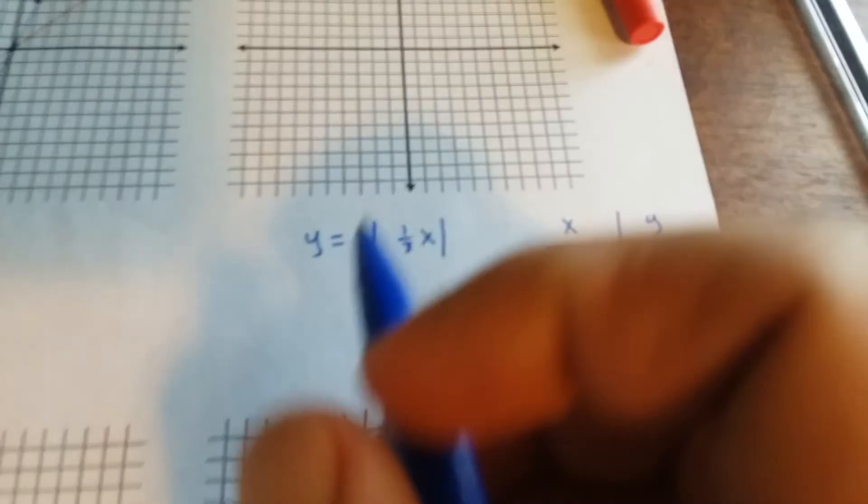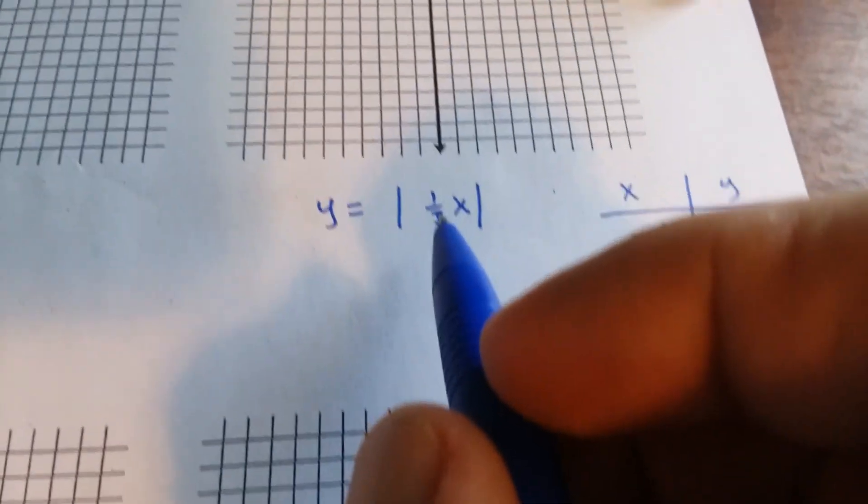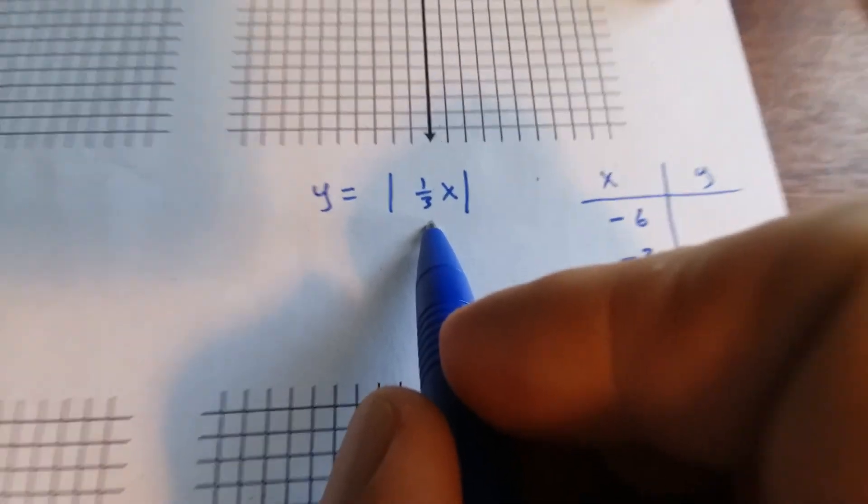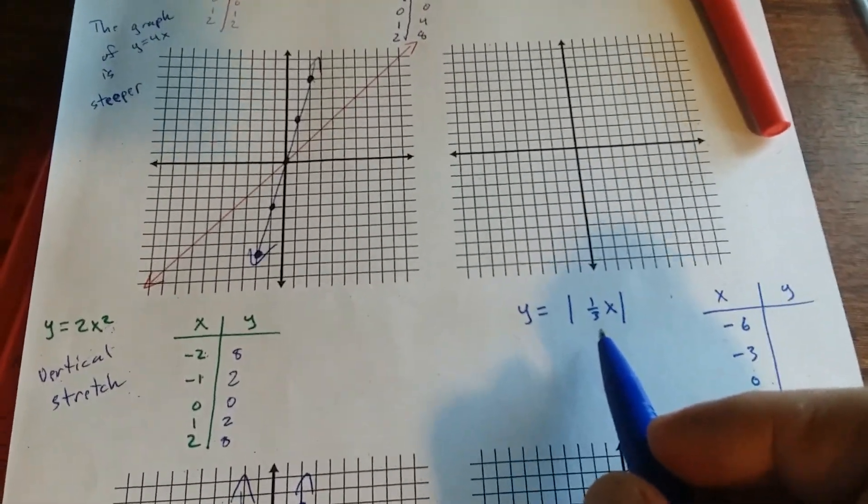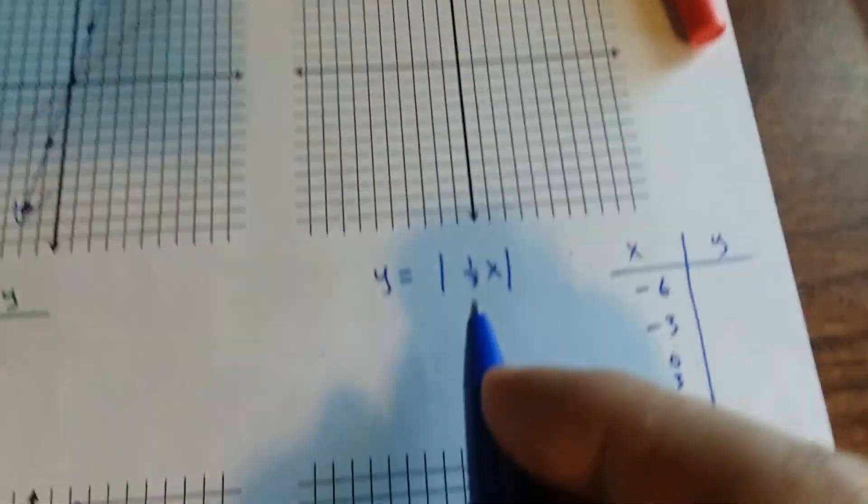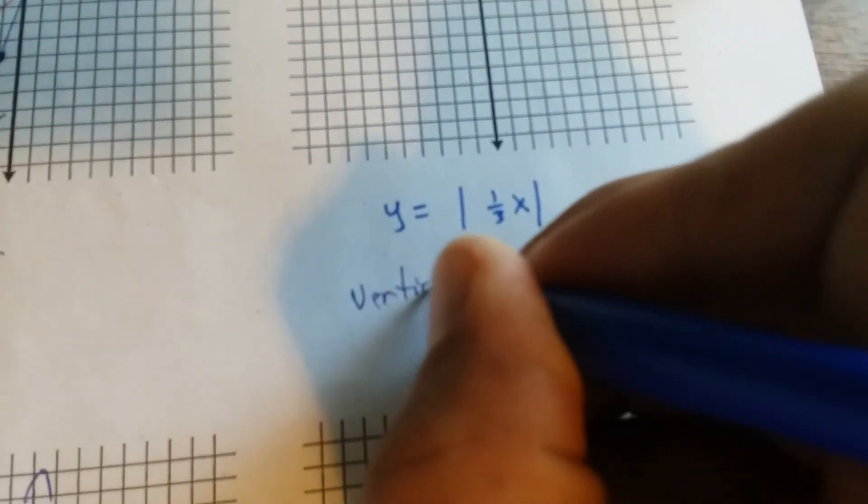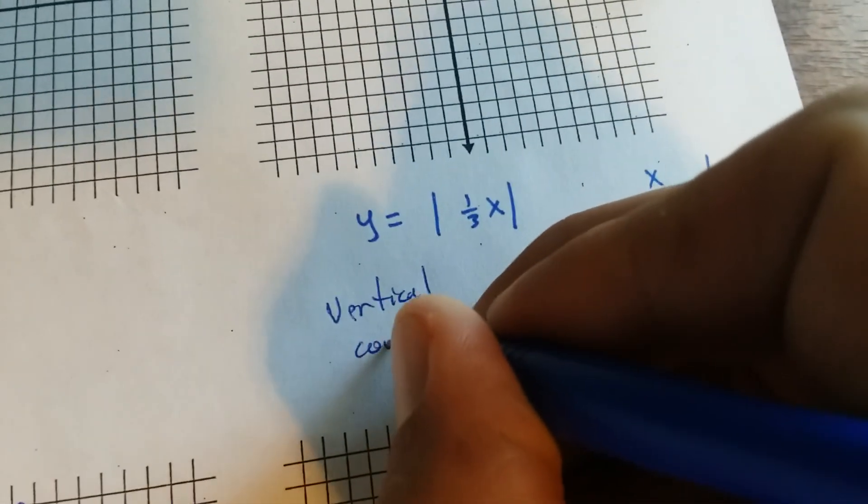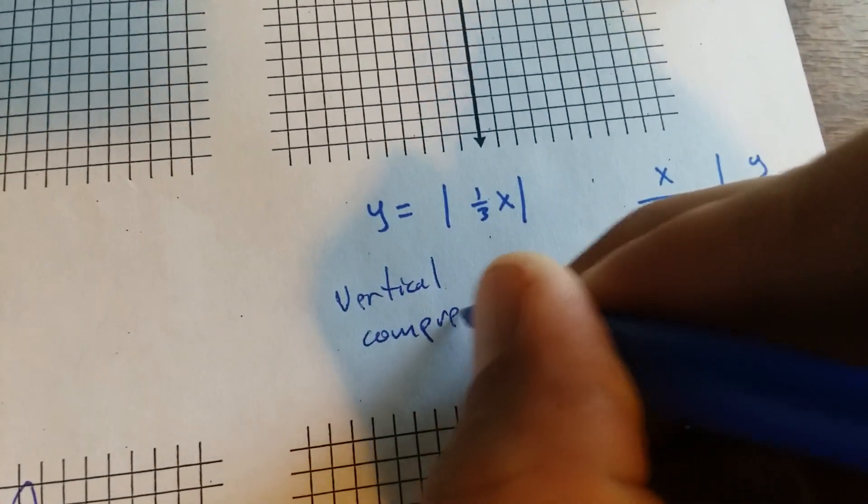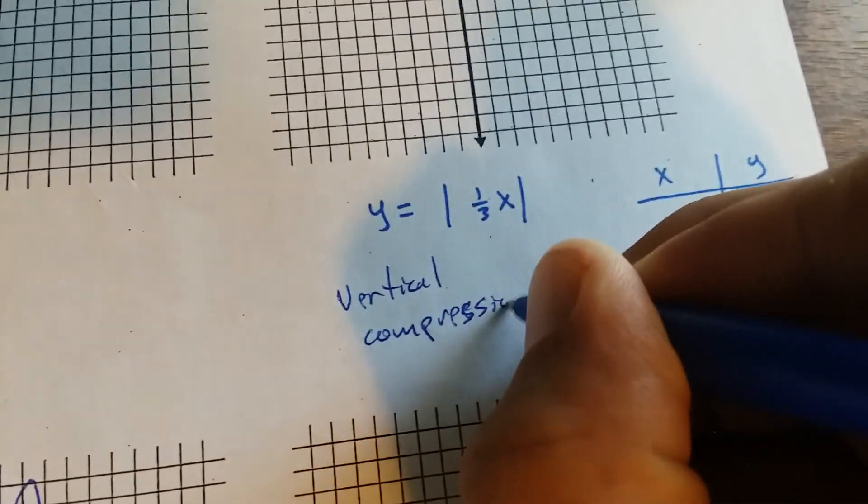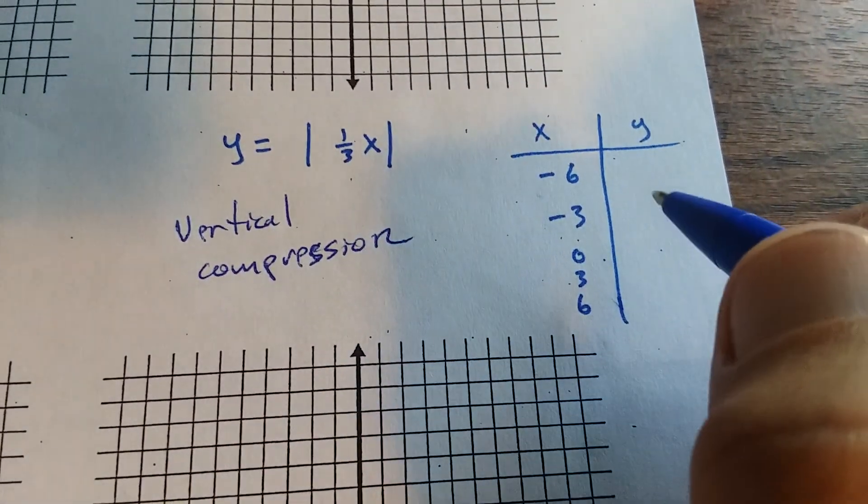Next one, the absolute value of a third x. Notice 1 third is less than 1. And that tells us because the coefficient is less than 1, it's compressed vertically. So write vertical compression to describe the graph. That's 1 point. And then make your table.